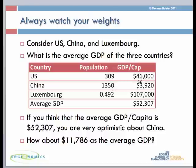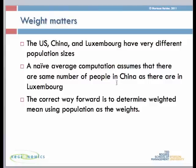The $46,000 figure carries a weight of 309 million, whereas $3,920 has a weight of 1.35 billion, and the $107,000 for Luxembourg carries only a weight of 0.5 million. This naive estimate of average GDP assumes that the population of the three countries is the same. To avoid this, you need to compute weighted means because weight matters and you have to correct for it.